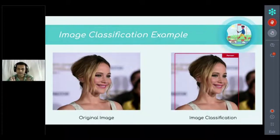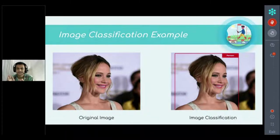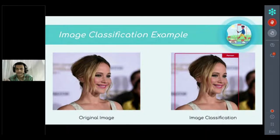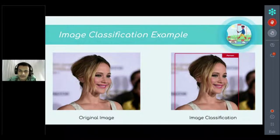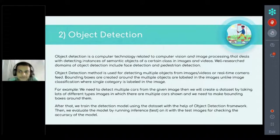Here is an example of image classification: if we input an image of a person, the image classification output will detect whether or not a person is there and label it accordingly. The next technique is object detection, which improves on the limitations of image classification.